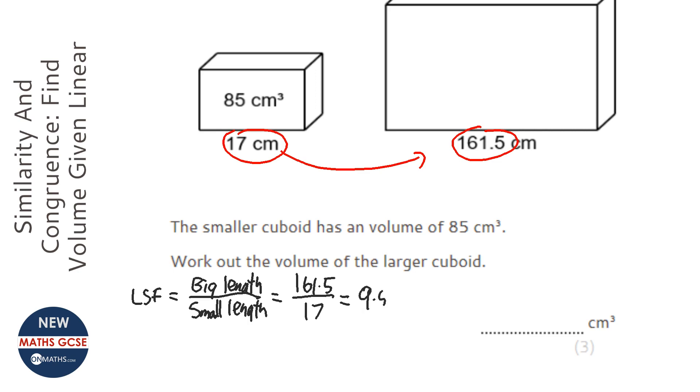Now to work out the volume scale factor, what we've got to do is times by the linear scale factor three times. So times 9.5 times 9.5 times 9.5 - we'll do 9.5 cubed.